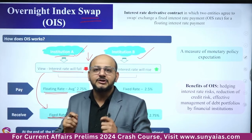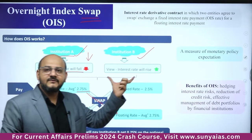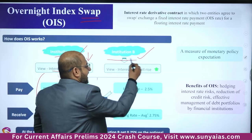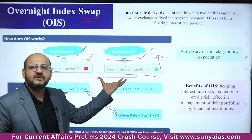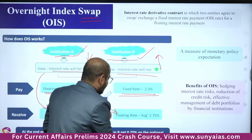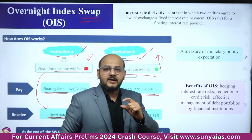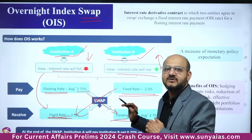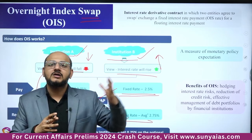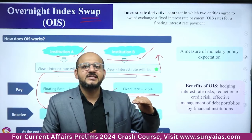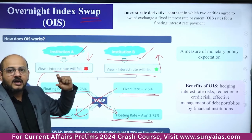Institution A swaps to a fixed interest rate so that even if the economy's rates fall, it can ascertain a certain fixed return. Whereas Institution B's viewpoint is that interest rates are going to increase, so it will swap from a fixed interest rate to the floating interest rate. In this way, organizations and financial institutions across the economy — even outside India — exchange and manage their interest rates. This is called Overnight Index Swap.